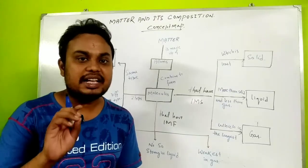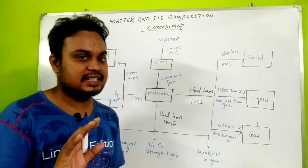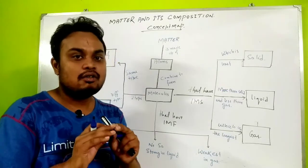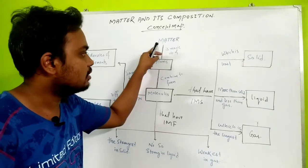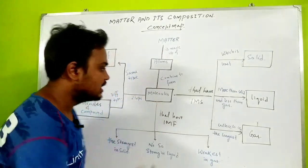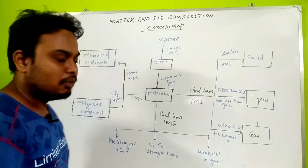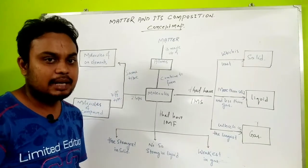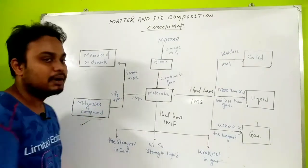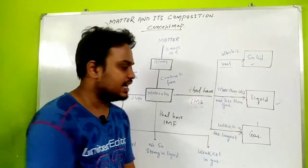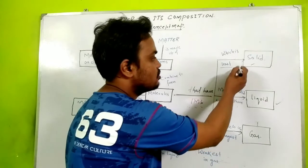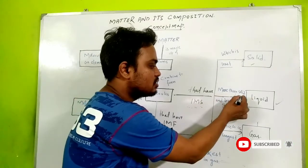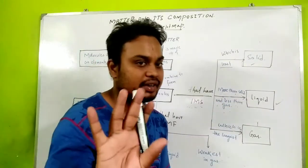Now let's look at the map concept to summarize. Matter is made up of atoms; when combined, atoms form molecules. If you combine the same type of atoms, you get elements; if different types of atoms combine, you get a compound. Regarding intermolecular space: it is the least in solid, the largest in gas, and in the middle is liquid — more than solid and less than gas.